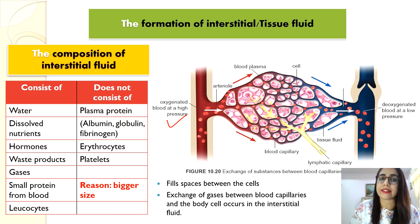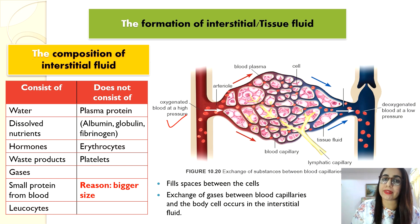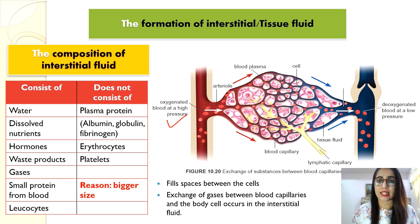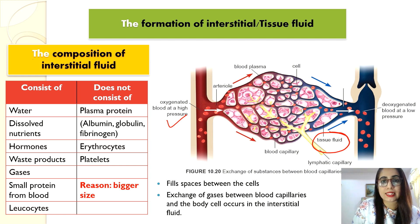The high blood pressure forces blood plasma — except plasma protein — to cross the epithelial cells of the capillary wall into the gaps between the cells to form tissue fluid. As you can see in the diagram, tissue fluid fills the gaps between the cells.